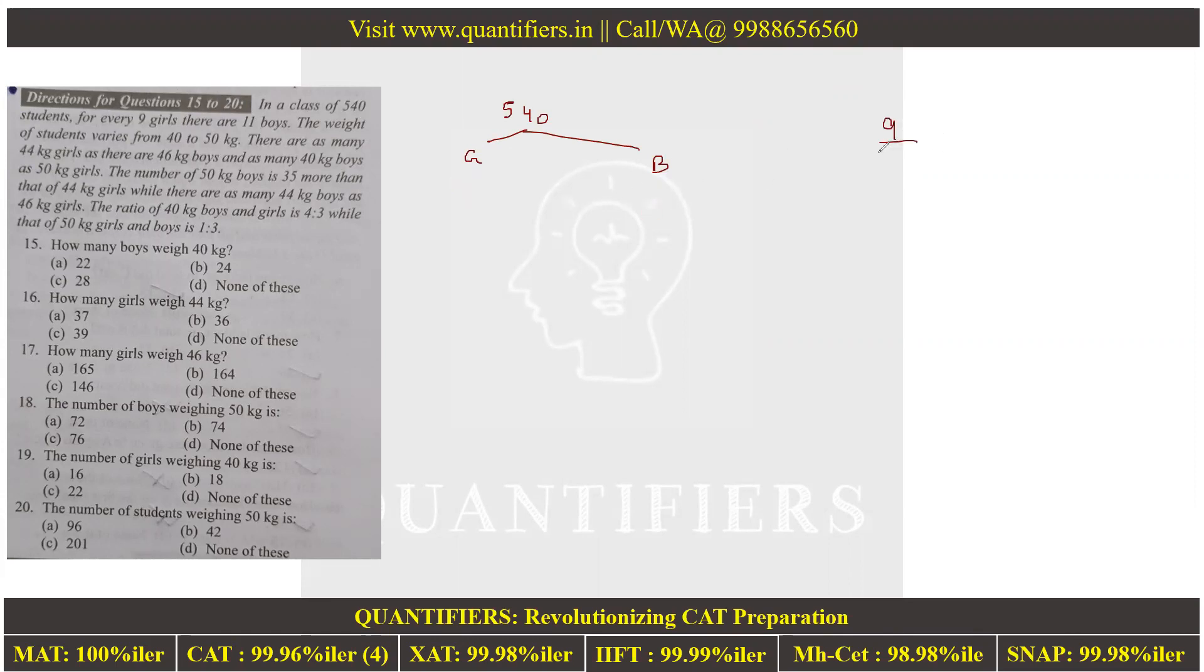This means girls is 9/20 × 540, that is 27 × 9, which equals 243. So the remaining is 297. You can also check it: 11/20 × 540 = 297.